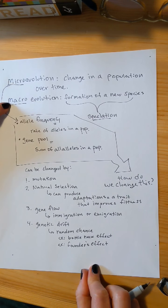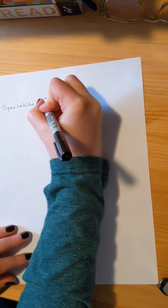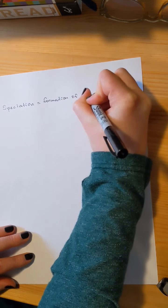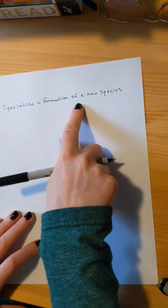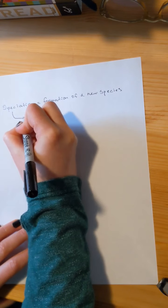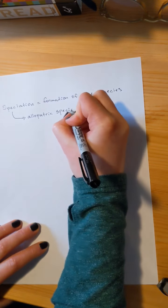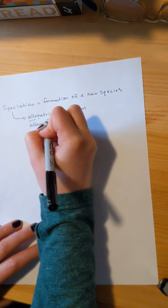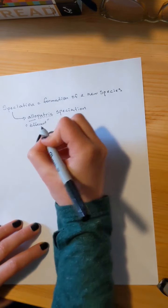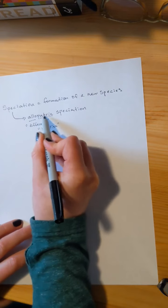That was microevolution, let's talk about macroevolution. So speciation is going to be the formation of a new species. We're creating a new species, that's super cool. And there's a couple ways that we can do this. You can form a new species allopatrically or sympatrically. Allo means different, and patric means location.